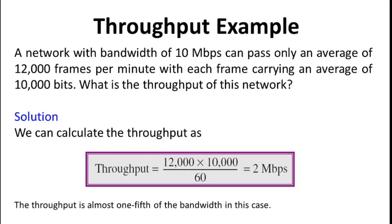Let us see throughput with an example. A network with bandwidth of 10 Mbps can pass only an average of 12,000 frames per minute, with each frame carrying an average of 10,000 bits. So 12,000 frames multiplied by 10,000 bits gives the total number of bits per minute, and dividing by 60 gives us 2 Mbps, which is the throughput. So the throughput is almost one-fifth of the bandwidth in this case.